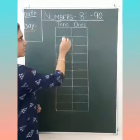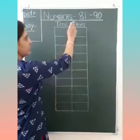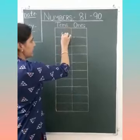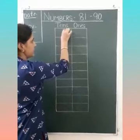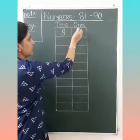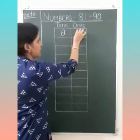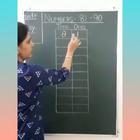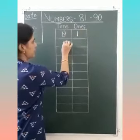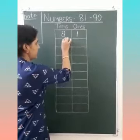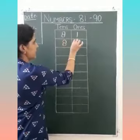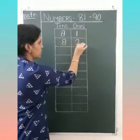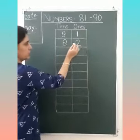First number is 81. At the 10s place: 8. At the 1s place: 1. 81. Next, at the 10s place: 8. At the 1s place: 2. 82.